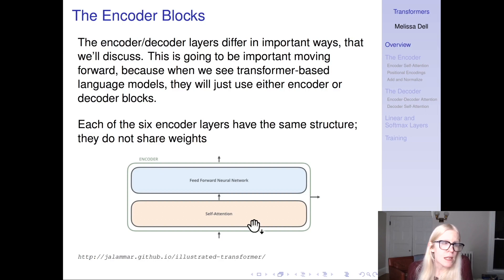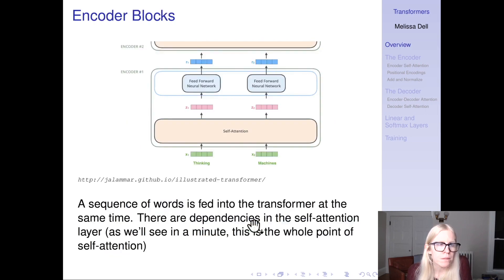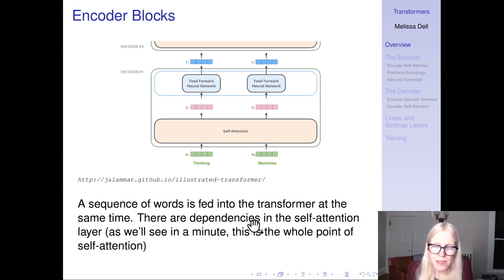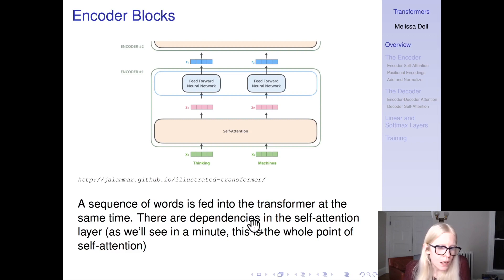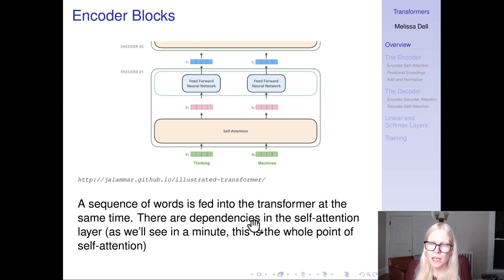Each of the six encoder layers have the same structure and they do not share weights. They have a self-attention layer and a feed-forward layer. We start with a sequence of words or tokens — you can think about tokens as words, although sometimes they're subwords. Those are fed into the transformer at the same time, which is already looking pretty different than what we saw with the RNN, where inputs were fed in sequentially.